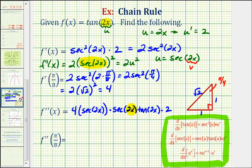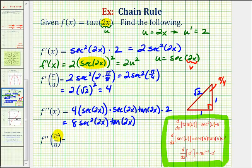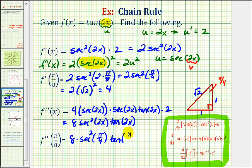Now let's clean this up. We have 4 times 2, that's 8. Two factors of secant 2x gives secant squared 2x, times one factor of tangent 2x. Now to find f double prime of pi over 8, we'll substitute pi over 8 for x. So we'll have 8 times secant squared of pi over 4, times tangent of pi over 4.